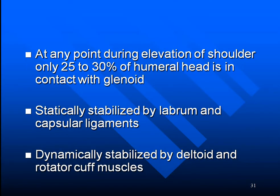At any point during shoulder elevation, only a small portion of the humeral head — usually 25 to 30 percent — is in contact with the glenoid fossa. The shoulder joint therefore needs high stability, provided statically by the labrum and capsular ligaments: the superior glenohumeral ligament, middle glenohumeral ligament, and the inferior glenohumeral ligament complex. Dynamic stability is provided by the deltoid, upper trapezius, and the four rotator cuff members.